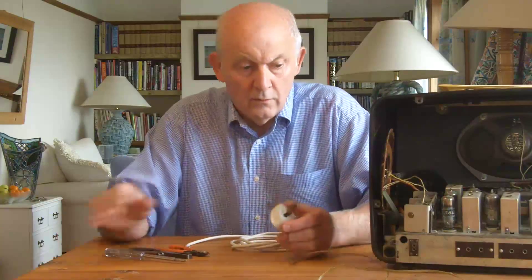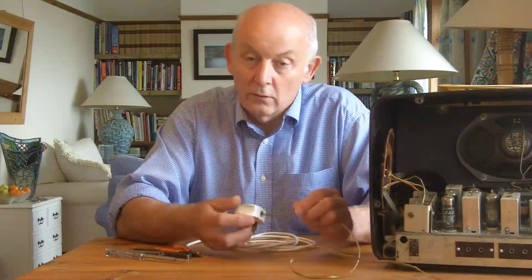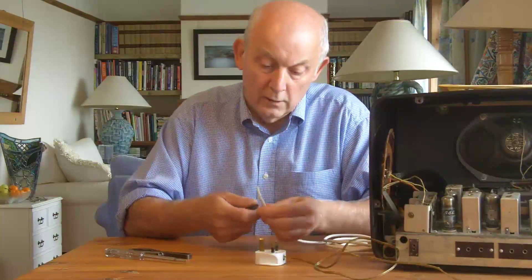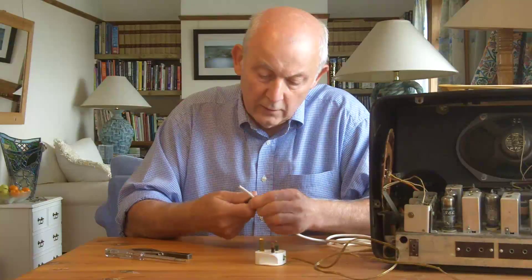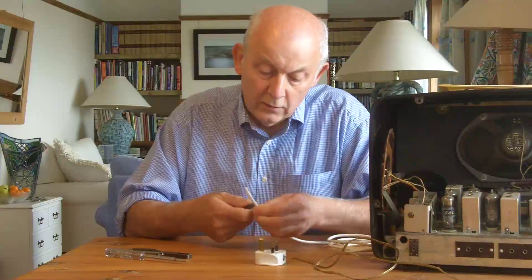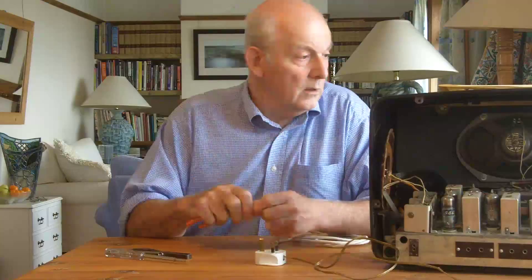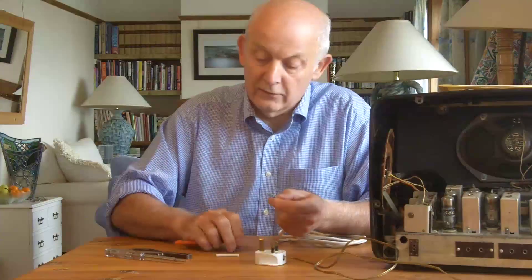I haven't set out to restore this radio particularly, but remember I said it's got a two-core lead on it. It's got its own isolation transformer built into it, but it's designed to have a live chassis and somebody's taken that live off, so I'm going to replace the lead. The lead I'm putting on is a white three-core flex, and that's just because that's what I happen to have. Originally the radio would have had a brown flex on it.